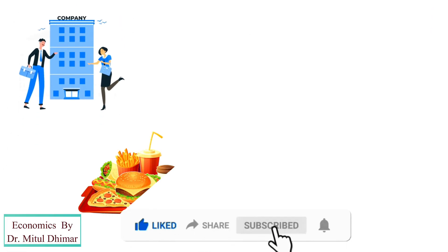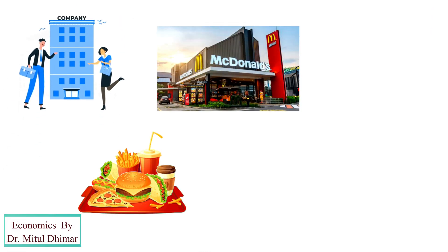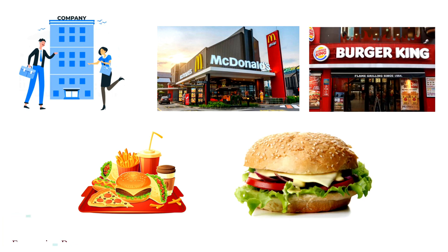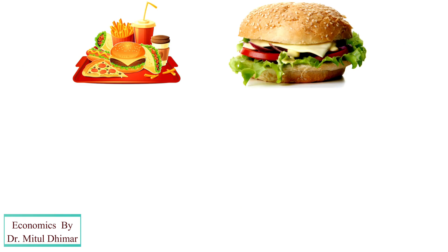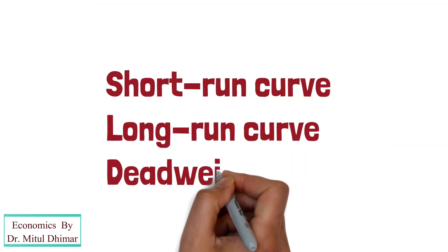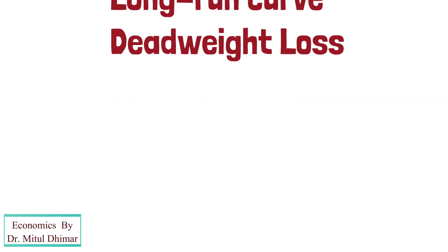Fast food companies like McDonald's and Burger King, who sell burgers in the market, are the most common example of monopolistic competition. Now let us understand the three types of monopolistic competition graphs.